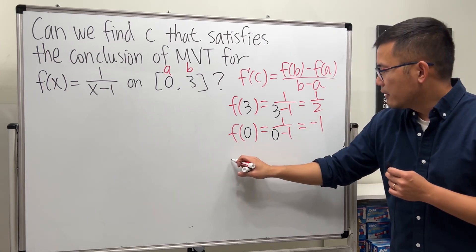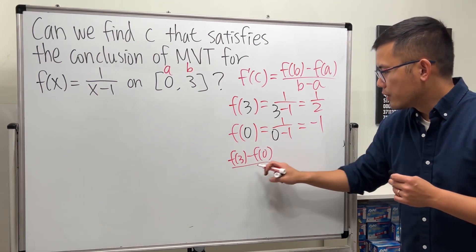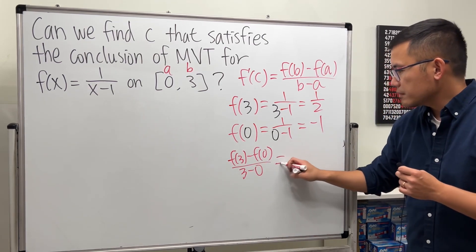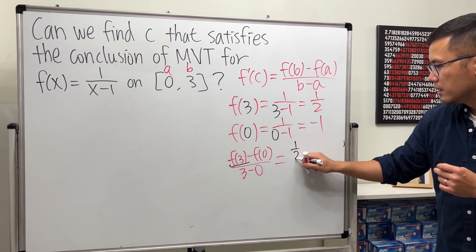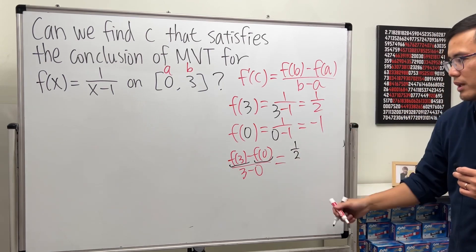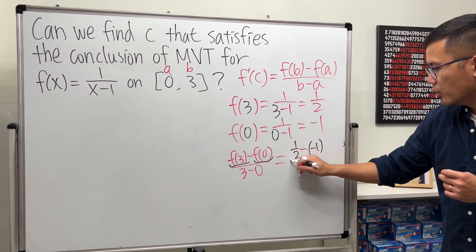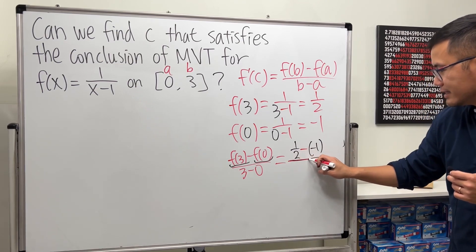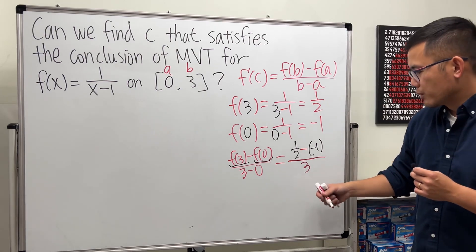And put them together, we will have f of 3 minus f of 0 over 3 minus 0. This right here is 1 half. This right here is negative 1. So that's minus negative 1, and then over 3. All right, just go ahead and fix this real quick.